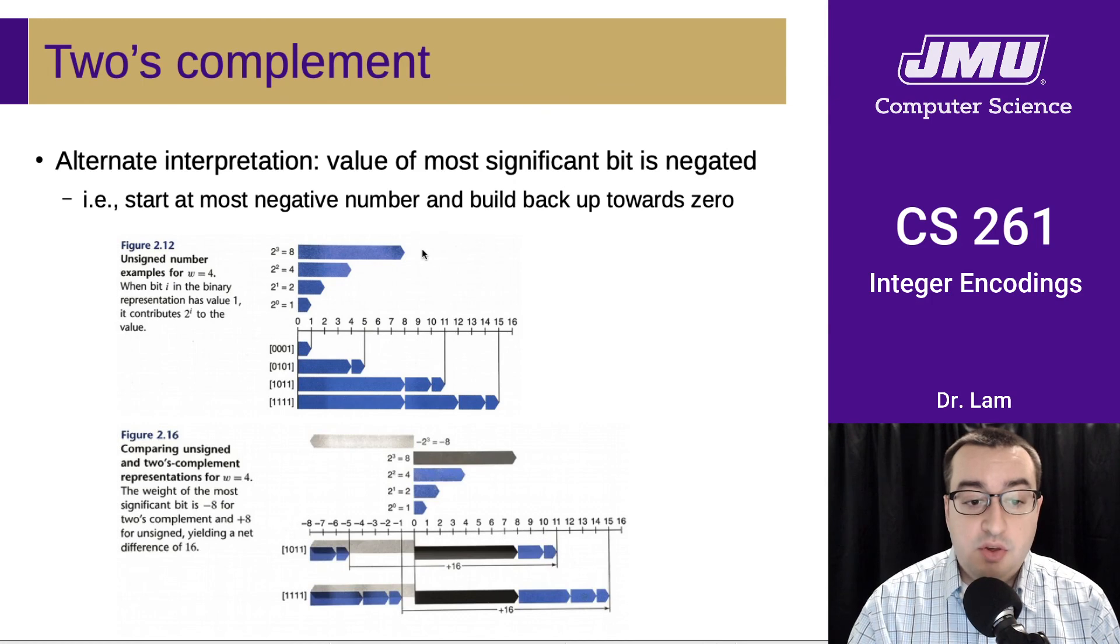In other words, you would then sort of start at the most negative number if you have a negative number and then kind of build back up towards zero. So whereas for unsigned numbers, all of the bits gave you a positive boost or a positive value, in two's complement, you could think of that first bit as actually giving you a negative value.